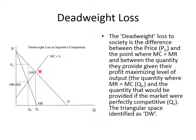We talked about consumer surplus. Here is the consumer surplus derived from this imperfectly competitive market. Because marginal revenue equals marginal cost right here, the producer will produce QIC units. The price that consumers are willing to pay for that many units is PIC. Consumer surplus is the difference between how much a consumer is willing to pay for a product and how much they actually pay, for as many units as they buy. We calculated this previously — it's this triangular space right here.